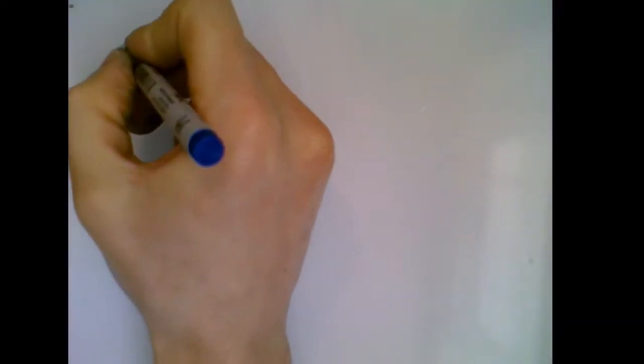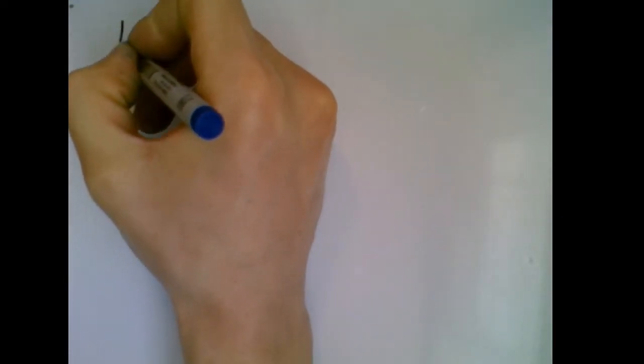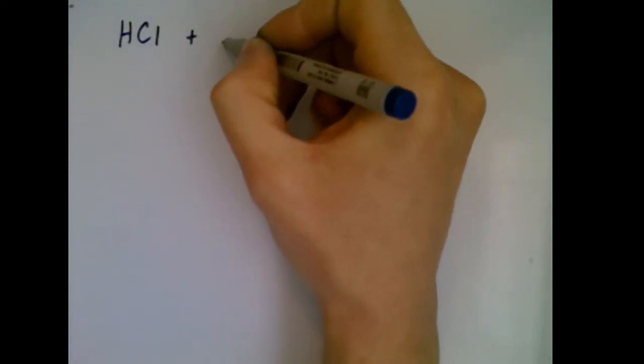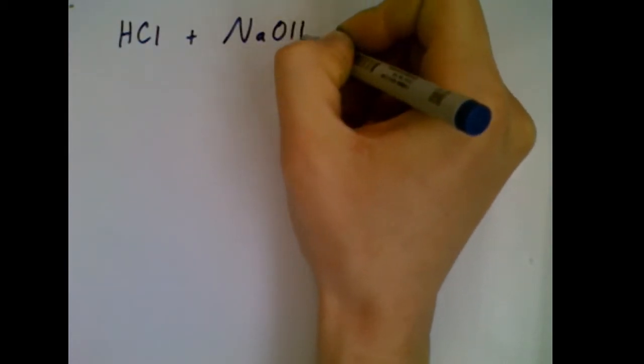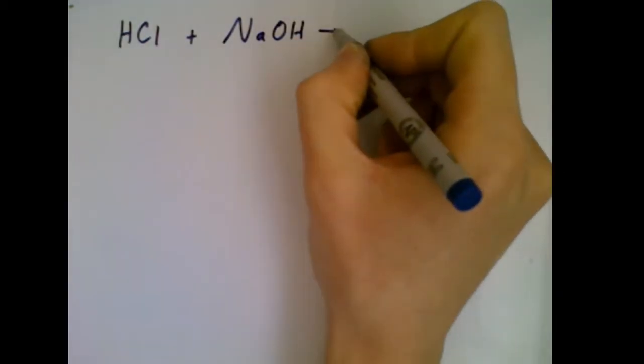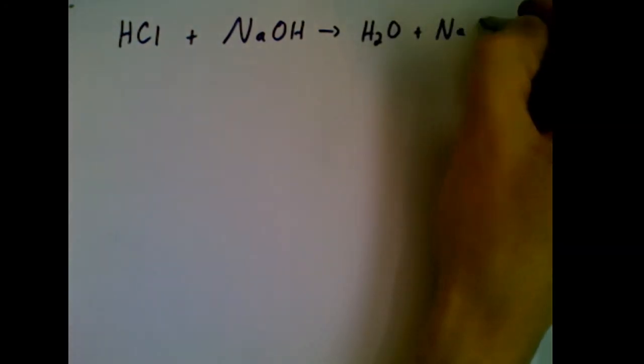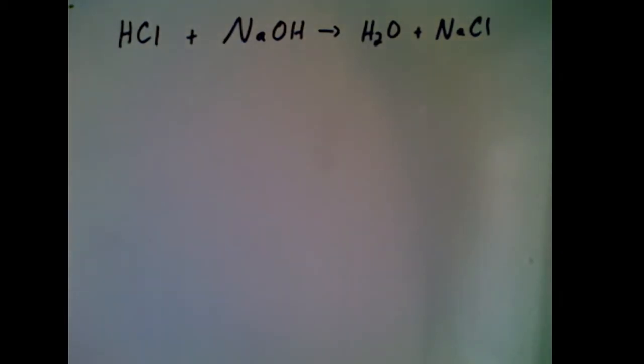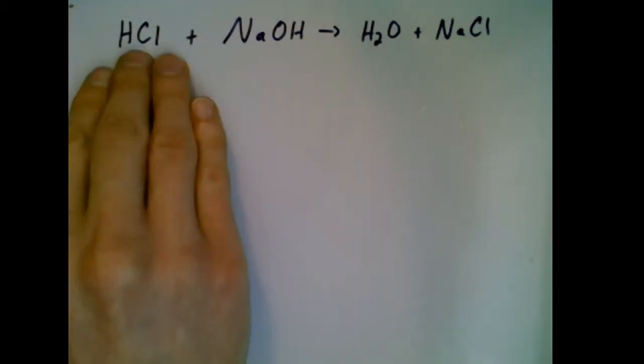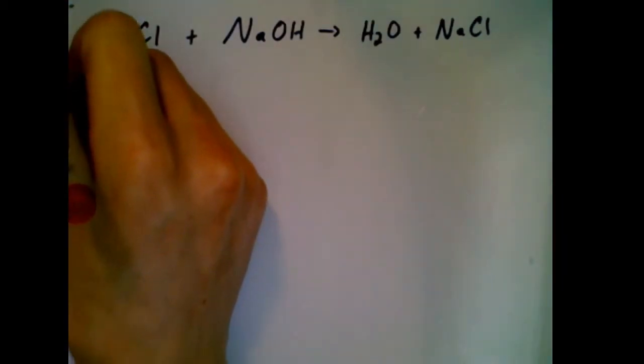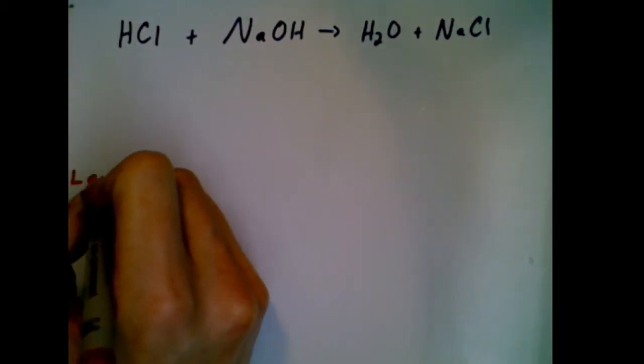Previously, I had shown you an example where we had hydrochloric acid, HCl, reacting with sodium hydroxide NaOH, producing water and sodium chloride. During this reaction, things have to be balanced. What I mean by that is you have to deal with a law which is called the law of conservation of mass.